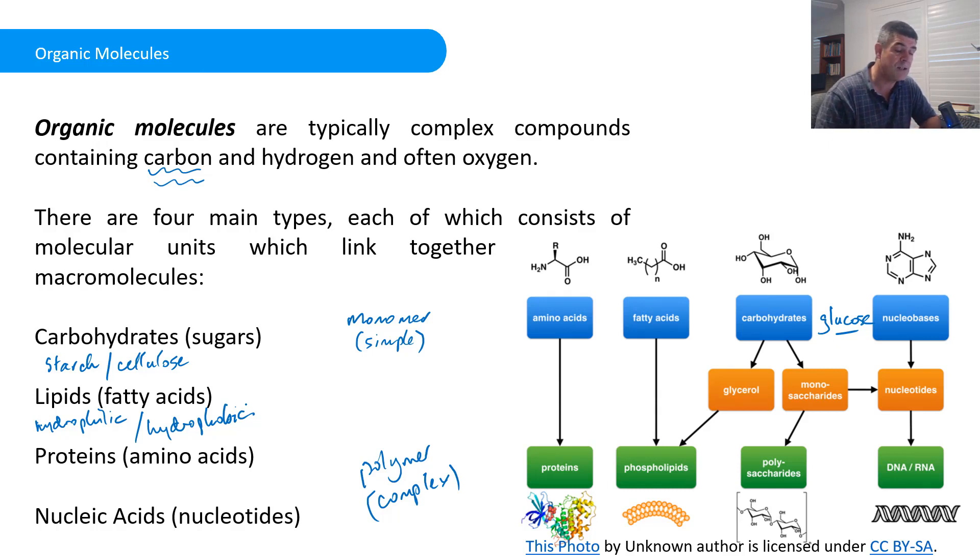The third group are proteins. Carbohydrates and lipids are primarily just carbon, hydrogen, and oxygen. Nitrogen is a very important component of amino acids. And there are a number of other elements that kind of enter in at this point too. Amino acids are the simple version for proteins.